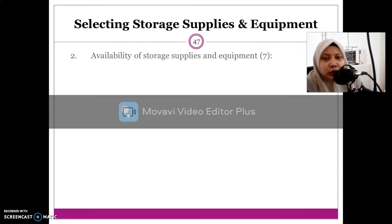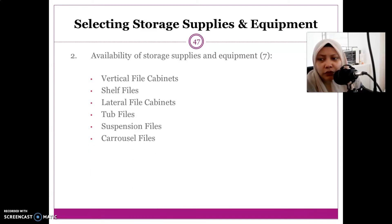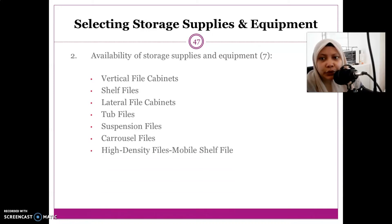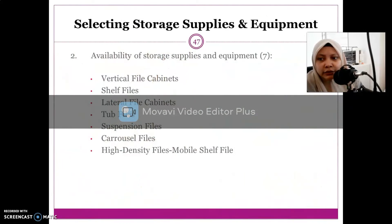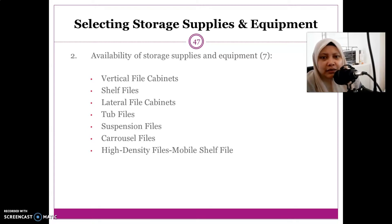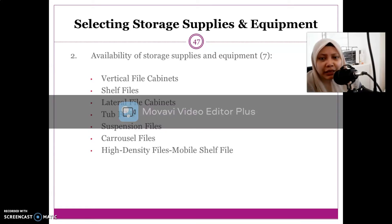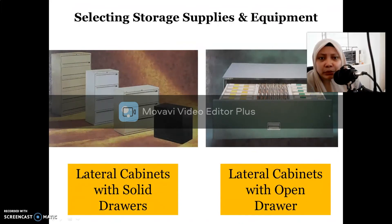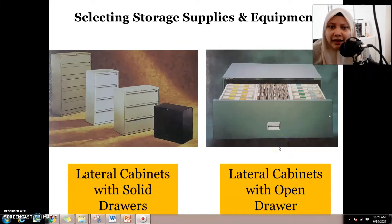The second factor is the availability of storage equipment and supplies. When we talk about availability, there are several types of storage equipment: vertical file cabinet, shaft file, lateral file cabinet, tube file, suspension file, carousel file, and high-density mobile shaft file. Some of these may be available in Malaysia, but certain storage supplies and equipment are not available here.